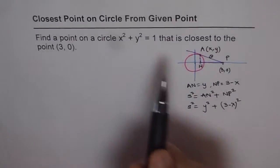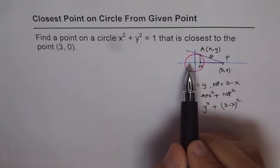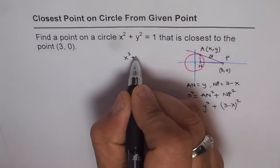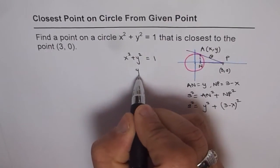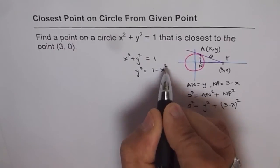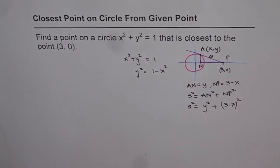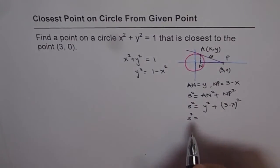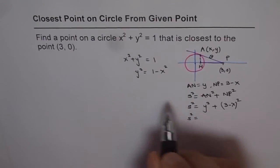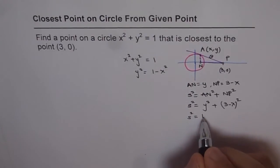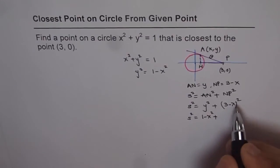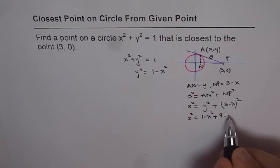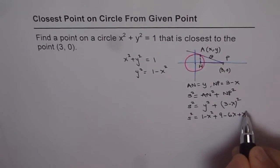Now what is y square? Y square can be written from the equation. Since y is a point on the circle, x square plus y square equals to 1, so that means y square equals to 1 minus x square. So the distance between A and P squared is equals to 1 minus x square plus, let me expand this now, 9 minus 6x plus x square.